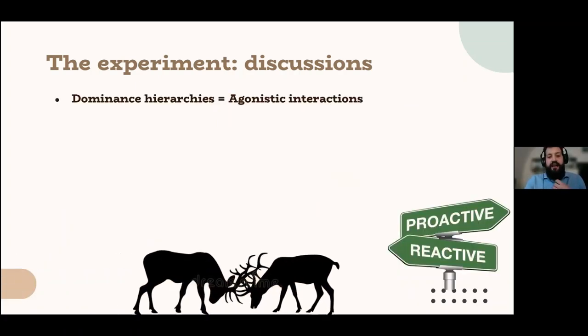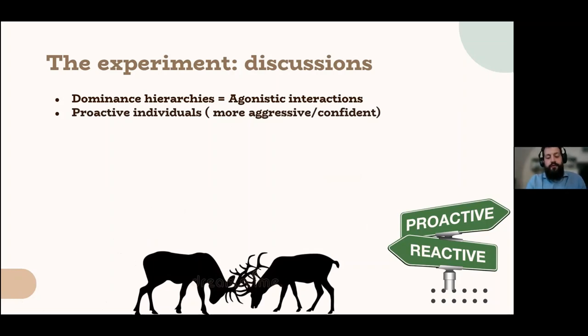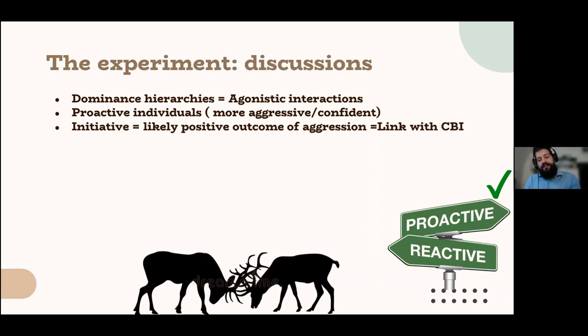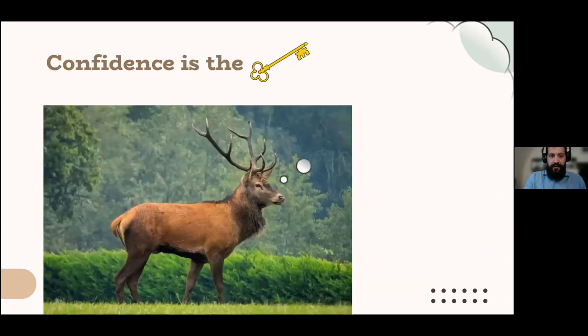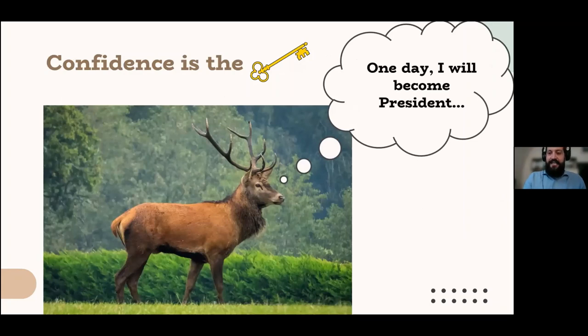Moreover, in deer, the dominance hierarchy is established via agonistic interactions and proactive animals, so those more aggressive or more confident are probably going to be more successful because they're probably those who are going to initiate the interaction. In other species, for example, the initiative is correlated to a positive outcome of aggression, which would explain the connection with the Clutton-Brock index for those traits. So, actually higher confidence will be connected to a greater risk taking proneness in fight, whereas a lower confidence will be connected to a smaller risk taking in fights, and the first strategy would seem to be more rewarding. In other words, for the deer, confidence could be the key to success.